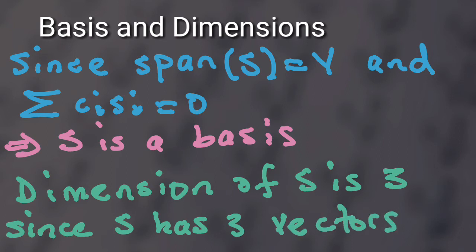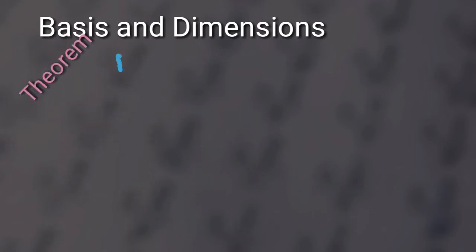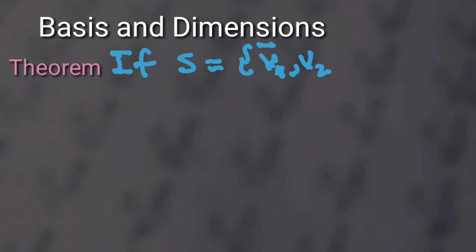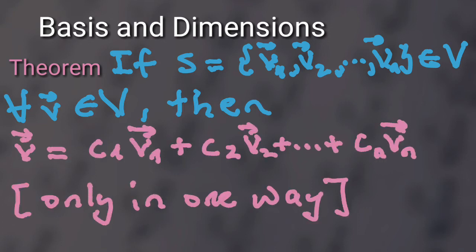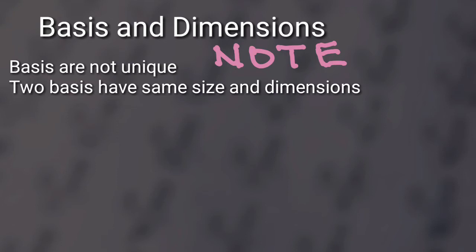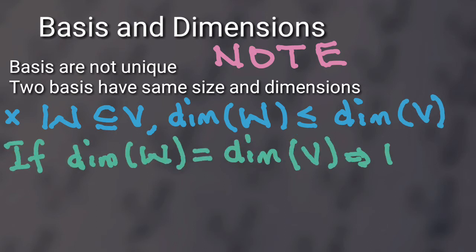Since span S equals V and S is linearly independent, that implies S is a basis. The dimension of S is 3, since S has only three elements. If S = {v1, v2, ..., vn} is a basis of the vector space V, then for any v in V, v can be represented in terms of v1, v2, ..., vn in exactly one way. Bases are not unique. Two bases have the same size and dimension. If W is a subspace of V, then the dimension of W is less than or equal to the dimension of V.